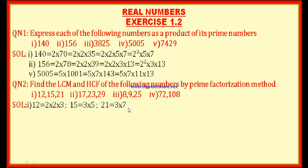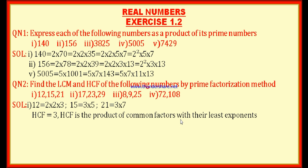Now let us find the HCF. HCF is the product of all common factors with their least exponents. We look at the common factors across all three numbers — 12, 15, and 21. 2 is a factor of 12 but not of 15, so leave it. 3 is a factor of 12, 15, and 21, so we write 3. There is no other common factor, therefore HCF of 12, 15, and 21 is 3.